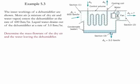Example 5.3. In this example we show the inner workings of a dehumidifier which has moist air, a mixture of dry air and water vapor. It enters the dehumidifier at a rate of 600 pounds mass per hour. The liquid water drains out from the dehumidifier at a rate of 3 pounds mass per hour. We need to determine the mass flow rate of the dry air and the water leaving the dehumidifier.